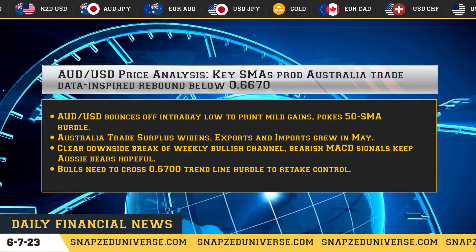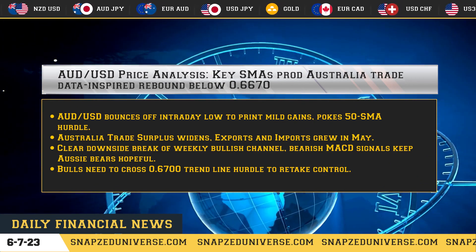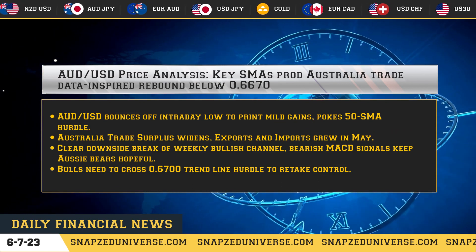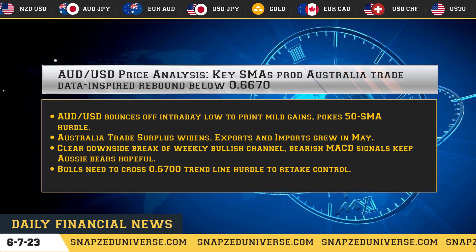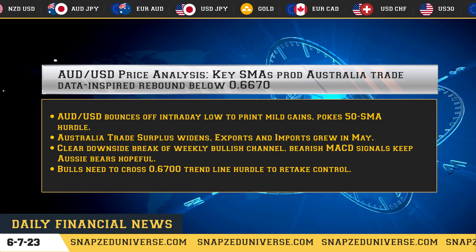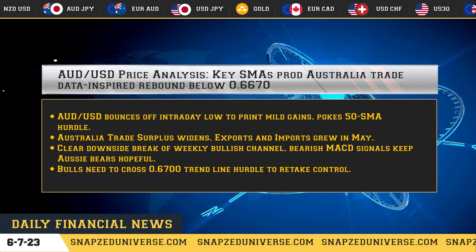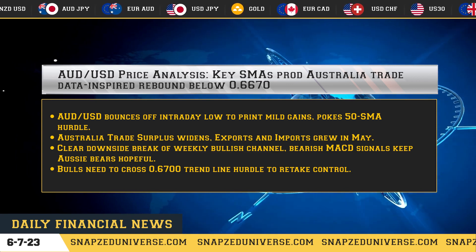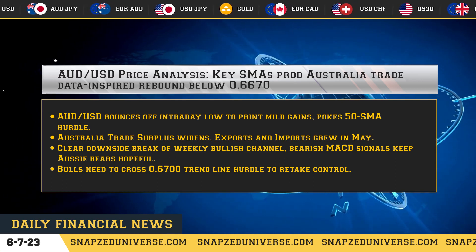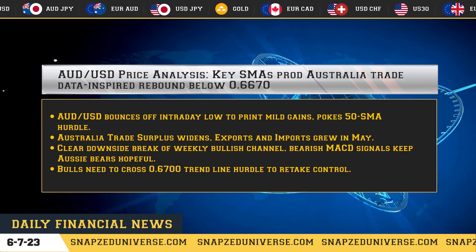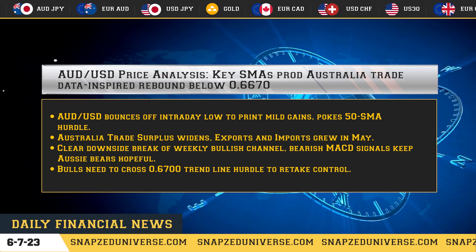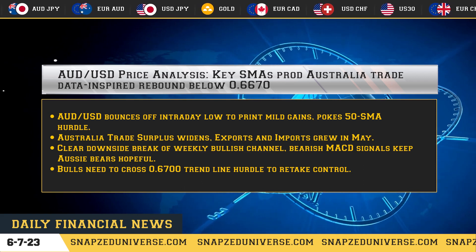AUD/USD price analysis: key SMAs prod an Australia trade data-inspired rebound below 0.6670. AUD/USD bounces off the intraday low to print mild gains, poking the 50 SMA hurdle. Australia's trade surplus widens as exports and imports grew in May. A clear downside break of the weekly bullish channel and bearish MACD signals keep Aussie bears hopeful. Bulls need to cross the 0.6700 trend line hurdle to retake control.